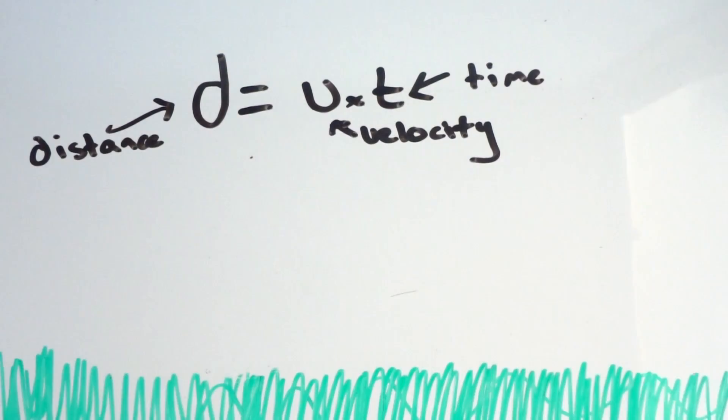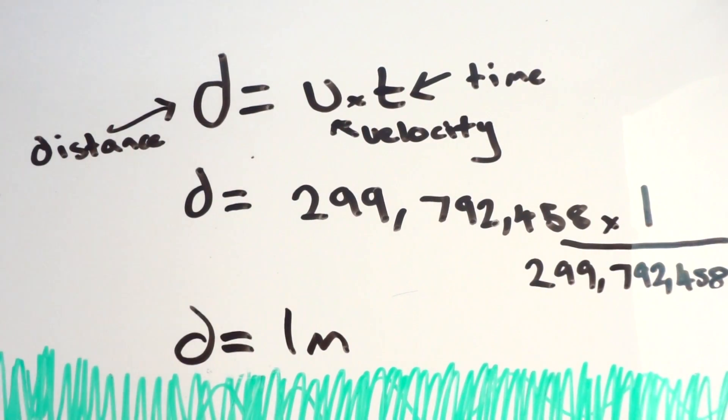Using d equals v times t, where d equals distance, v equals velocity or speed, and t equals time, you can calculate the metre. Now this isn't really helpful for anyone without a ruler who really needs to know how long a metre is, but if you happen to have a vacuum and a really accurate stopwatch handy, you could work it out.